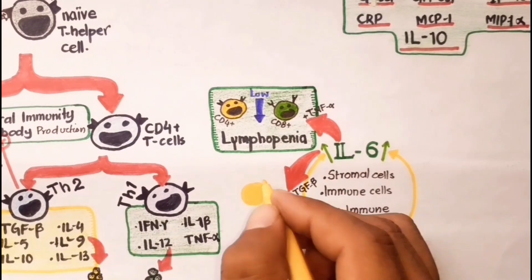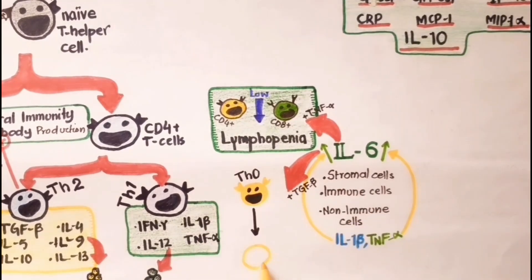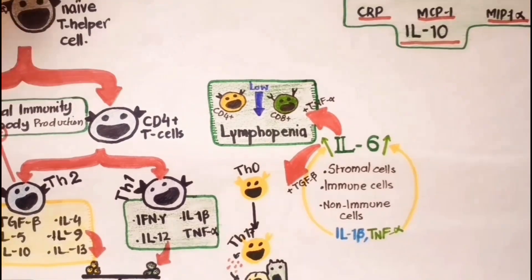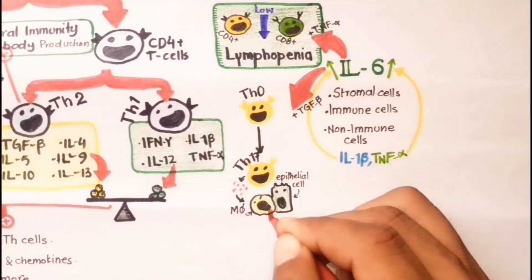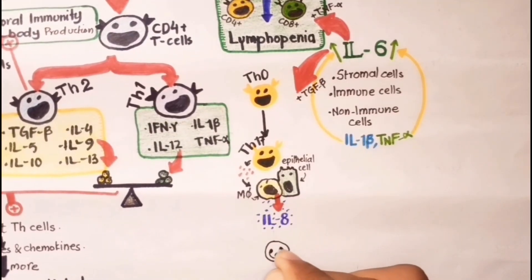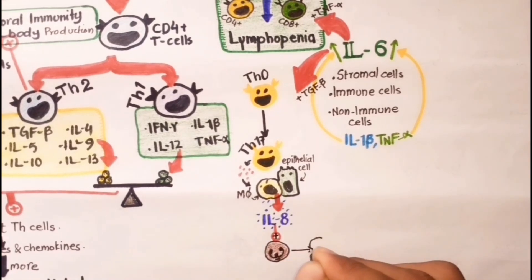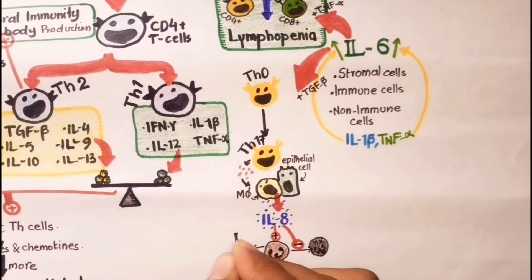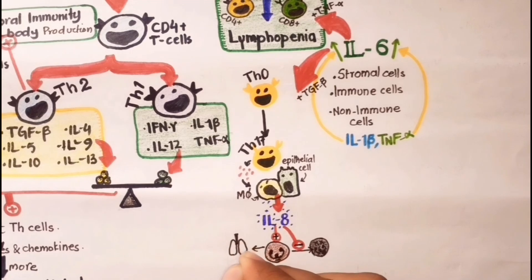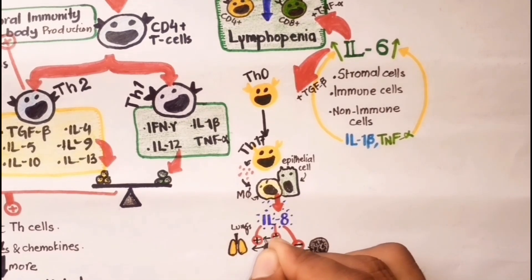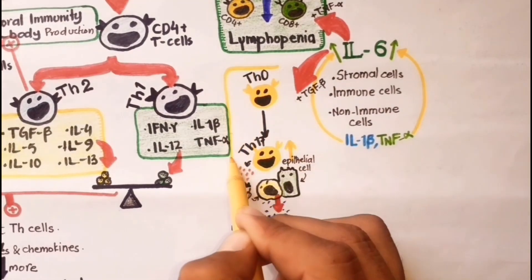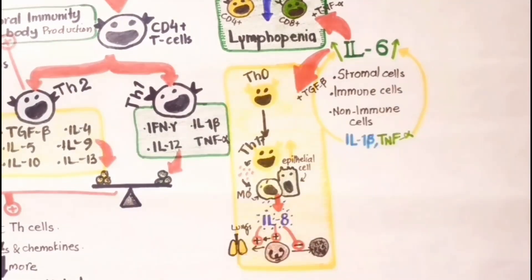Synergistically, IL-6 and TGF-beta induce maturation of naive T helper cells to T helper 17 cells, which secrete mediators acting on monocytes, macrophages, and alveolar epithelial cells, stimulating the synthesis of IL-8. IL-8 is a powerful chemoattractant and activator of neutrophils, and the apoptosis of neutrophils is inhibited by this chemokine. Thus, IL-8 plays a key role in stimulating neutrophil survival and recruitment to the lungs. High numbers of Th17 lymphocytes are found in peripheral blood of patients with severe SARS-CoV-2 infection, likely involved in triggering cytokine storm.